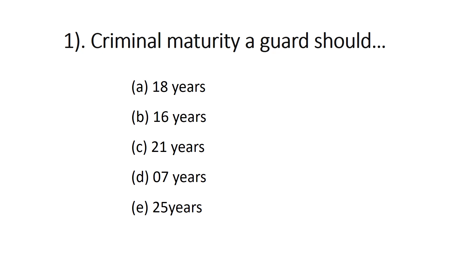Question number one: criminal maturity of a guard should be — 18 years, 16 years, 21 years, 7 years, or 25 years. It depends on the country, but most countries apply 18 years as the criminal maturity of a security guard. So 18 is the right answer.